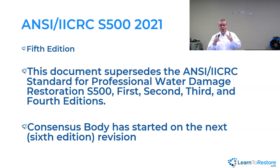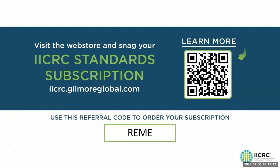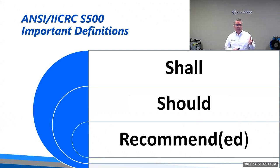You can buy the standard directly from the IICRC as a paper copy, or get it online as a subscription. The subscription has all the standards and all versions of all the standards — roughly about $200 a year to the IICRC. There's some important language in the standard you need to be aware of. The first two are often called trigger words: shall, should, and recommended. These are very important words, defined particularly for how they're utilized in the standard of care.